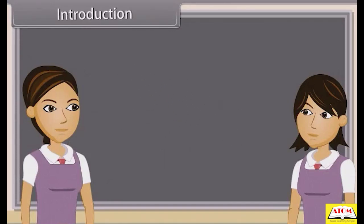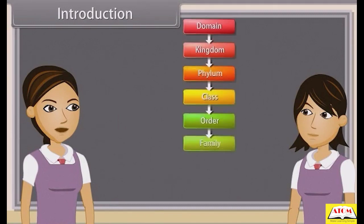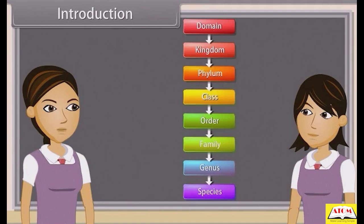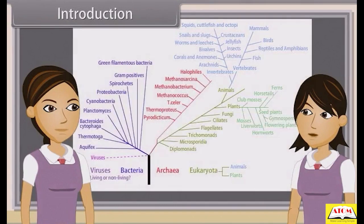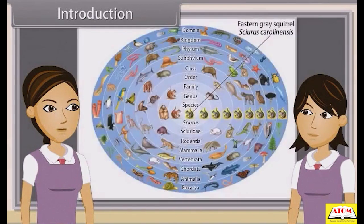Do you know what biological classification is? Biological classification, or scientific classification in biology, is a method by which biologists group and categorize organisms by biological type, such as genus or species. Modern biological classification has its roots in the work of Carolus Linnaeus, who grouped species according to shared physical characteristics. These groupings have since been revised to improve consistency with the Darwinian principle of common descent.